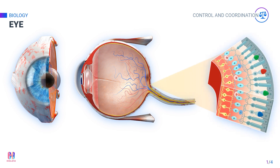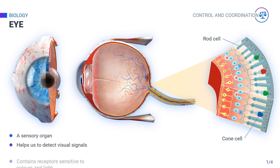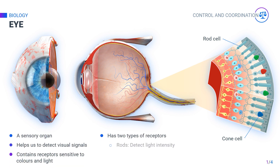The two main types of receptors in the eyes are rods and cones. The rods are responsible for detecting the intensity of the light, while the cones are responsible for detecting the wavelength of the light, helping to detect color. Let's look at the structure of the eye.